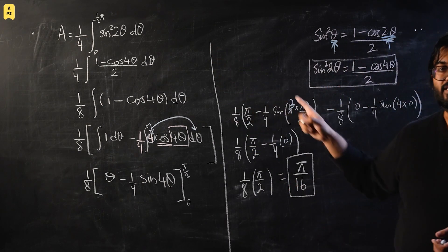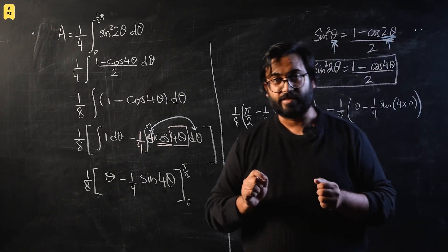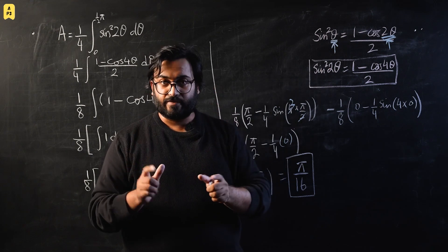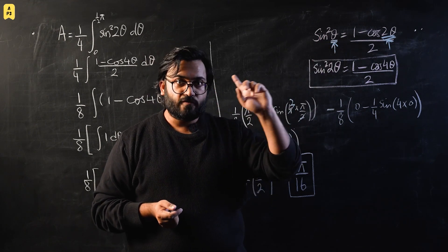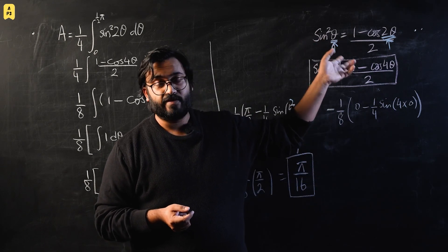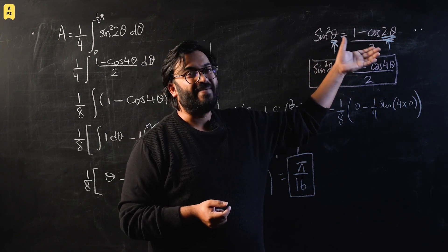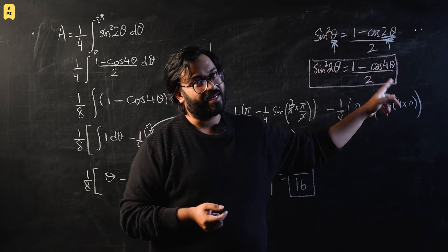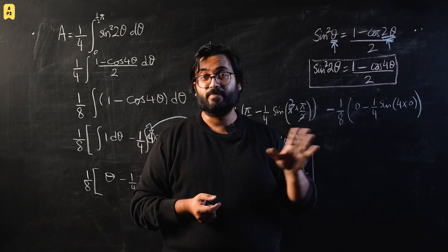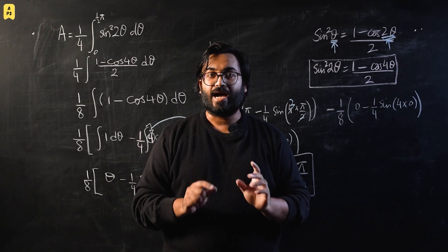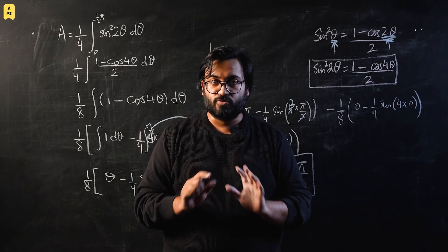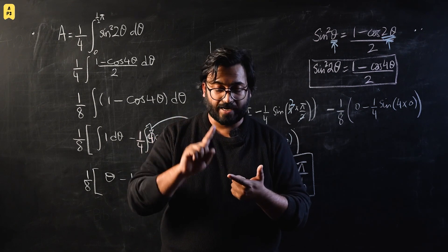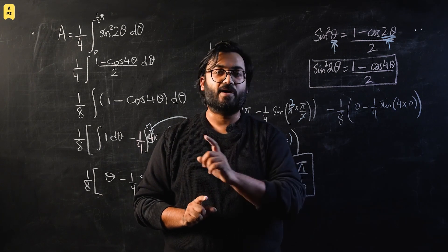So pi over 16 is our final answer. The key idea for this integration was the use of the double angle identity for even powers of sine and cos. If you're not familiar with this, I'd recommend checking my playlist or the notes on the website. You also need to know how to shift the angle from theta to 2theta in a double angle identity. This is one of the harder integration past paper questions — from 2009 — but it's excellent for testing integration by substitution and odd/even powers of sine and cos.